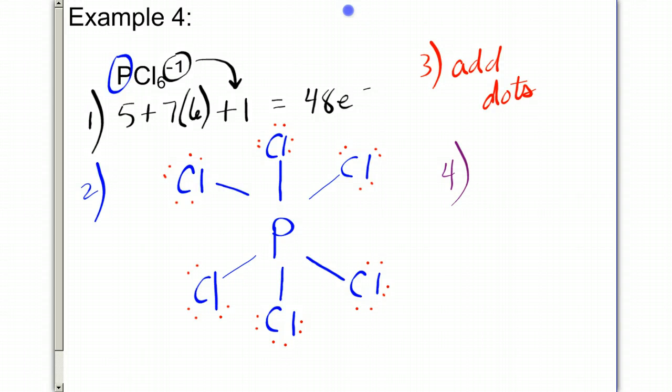Now let's check our total number of valence. I'll count my bonds first. We have 2, 4, 6, 8, 10, 12, 14, 16, 18, 20, 22, 24, 26, 28, 30, 32, 34, 36, 38, 40, 42, 44, 46, 48. So because I have 48 electrons total, which matches this, the structure is finished.